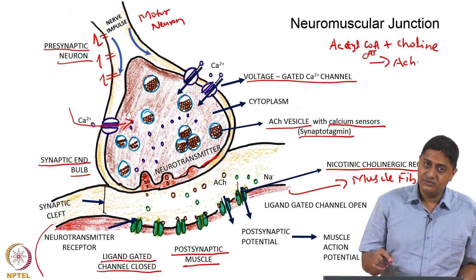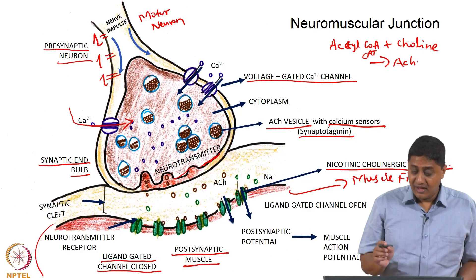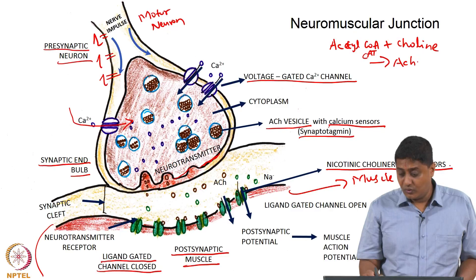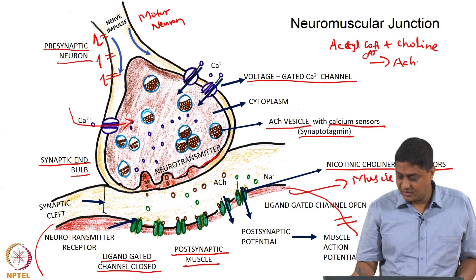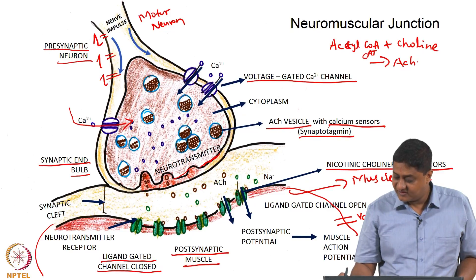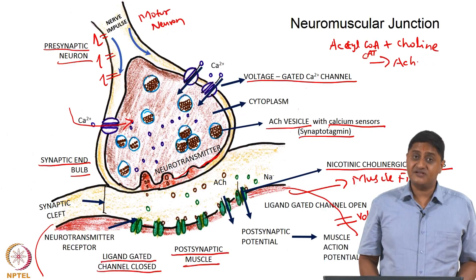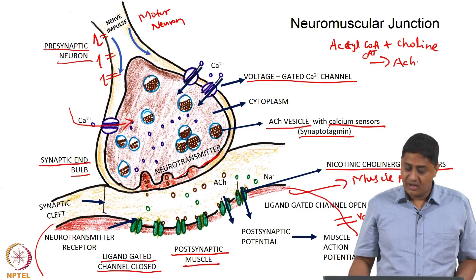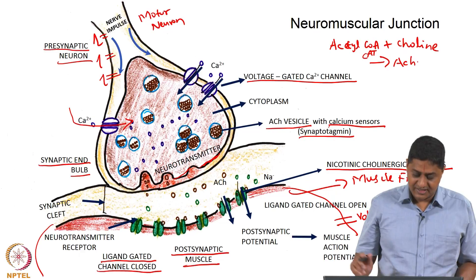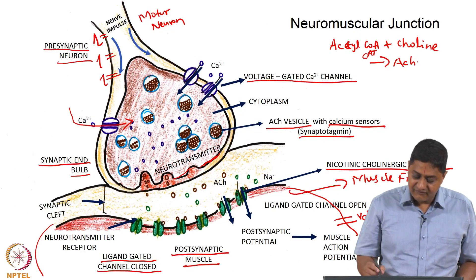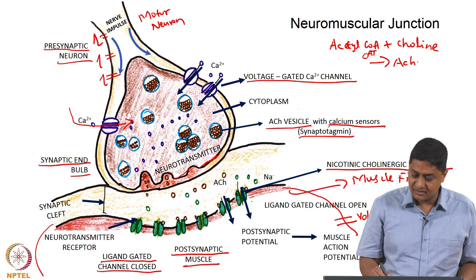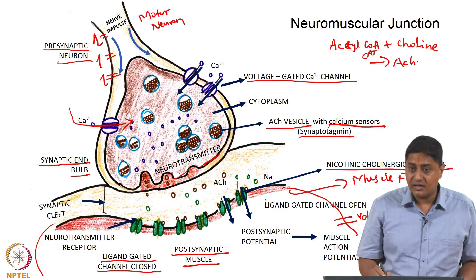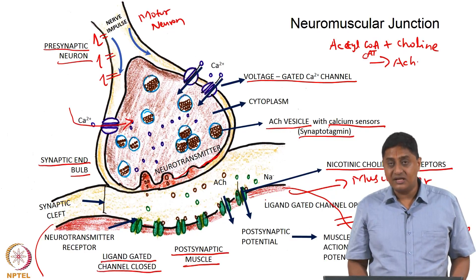When acetylcholine attaches to this receptor, the channel opens and lets in a lot of sodium. This influx of sodium could take a nearby voltage-gated sodium channel to threshold, causing a greater influx of sodium and an action potential in the muscle fiber. How the muscle fiber produces force is a topic for future classes, but for now it is sufficient to know that when sodium enters via the ligand-gated sodium channel or the nicotinic cholinergic receptors, it can and in many cases does cause the action potential in a muscle fiber.